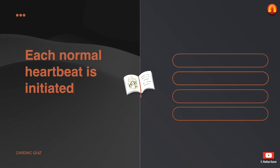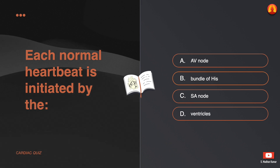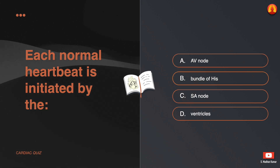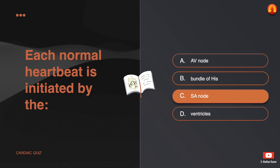Each normal heartbeat is initiated by the: A. AV node. B. Bundle of His. C. SA node. D. Ventricles. The correct answer is: SA node.